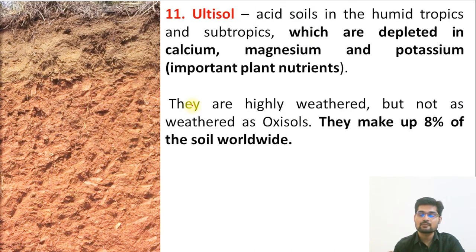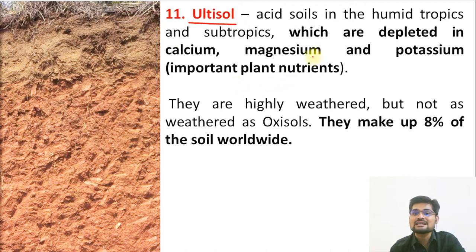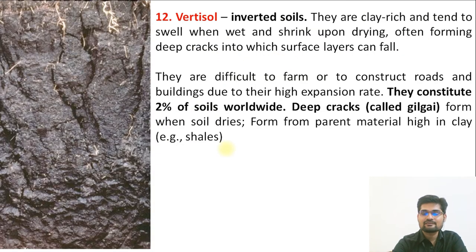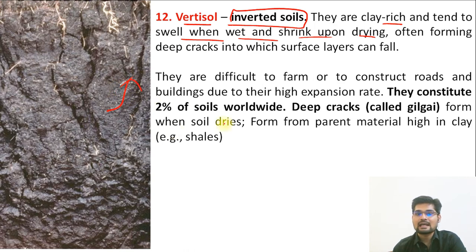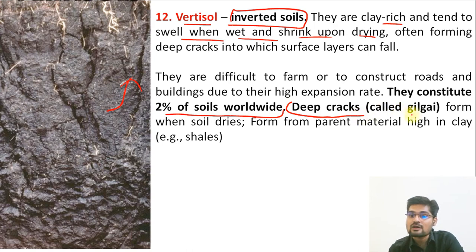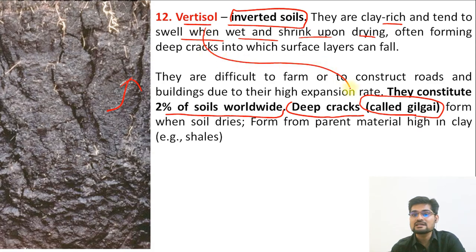The eleventh order is Ultisol — the ultimate level of soil — which means they are completely depleted and highly weathered. They are found in humid tropics and subtropics. Finally, the twelfth order is Vertisol — inverted soil horizons. They are clay-rich and tend to swell when wet and shrink upon drying. Because of moisture changes they keep swelling and shrinking, constituting about 2% of world soils. They have deep cracks and are called Gilgai.